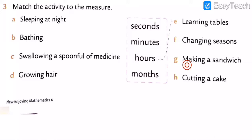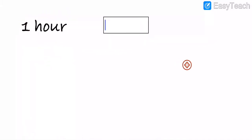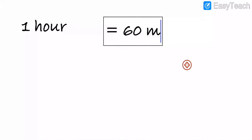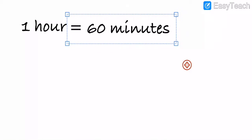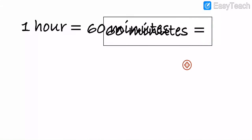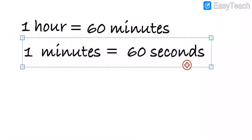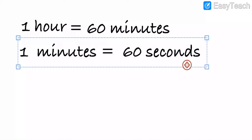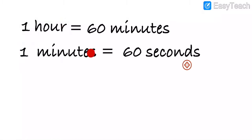So I am going to explain one more thing. One hour is equal to sixty minutes. And one minute is equal to sixty seconds. Got my points? One hour is equal to sixty minutes, and one minute is equal to sixty seconds. You have to compulsorily keep these both points in mind.